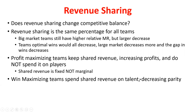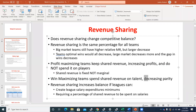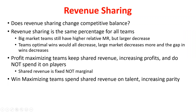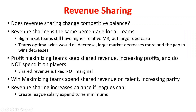Increasing parity — basically improving competitive balance — means how equal these teams look. Even if we had profit maximizing teams, if I could guarantee that a certain percent of that shared revenue had to be used on player salaries, some teams might shift money around, but potentially we could enforce that if I'm sharing some of this revenue, you have to start spending a certain percent on player salaries. That could increase the quality of teams, with revenue sharing and a required salary spend percentage both simultaneously active.